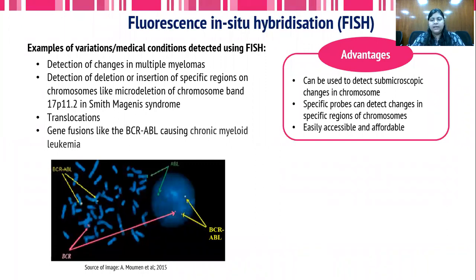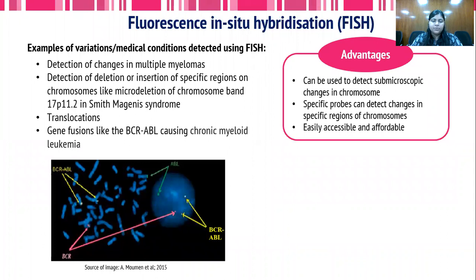The advantages of FISH are that it can be used to detect sub-microscopic level changes in the chromosome, as opposed to karyotyping which detects mostly microscopic changes. We can have specific probes for specific regions, and hence changes in those specific regions could be detected. FISH is also easily accessible and relatively affordable.